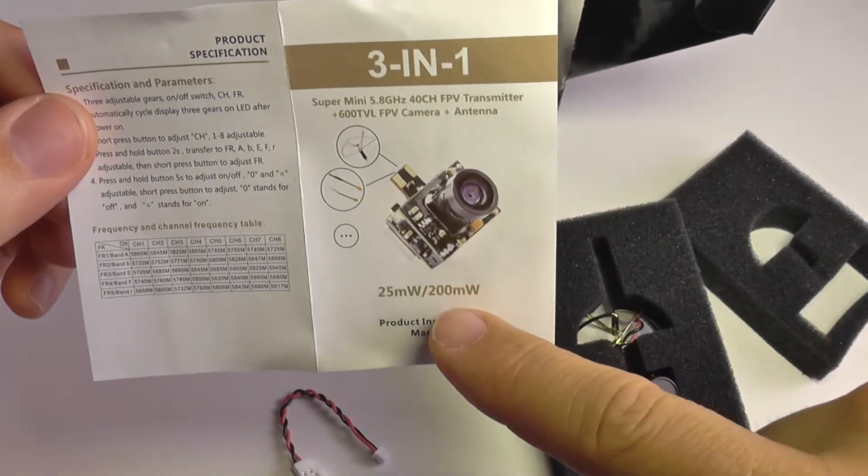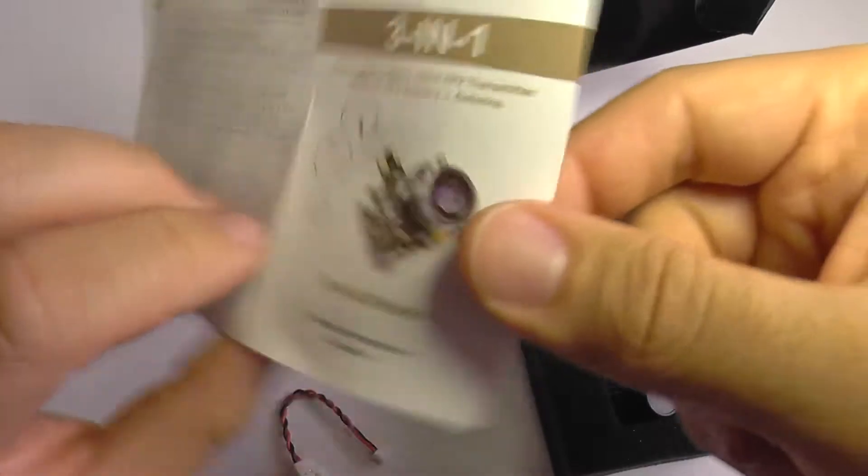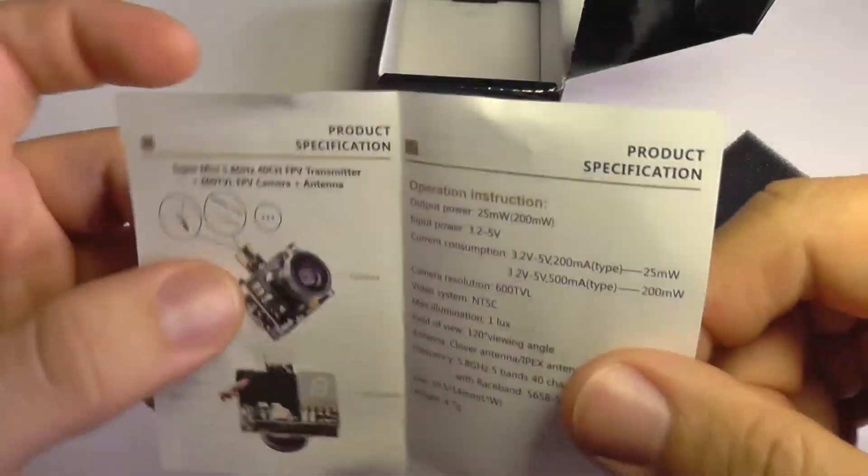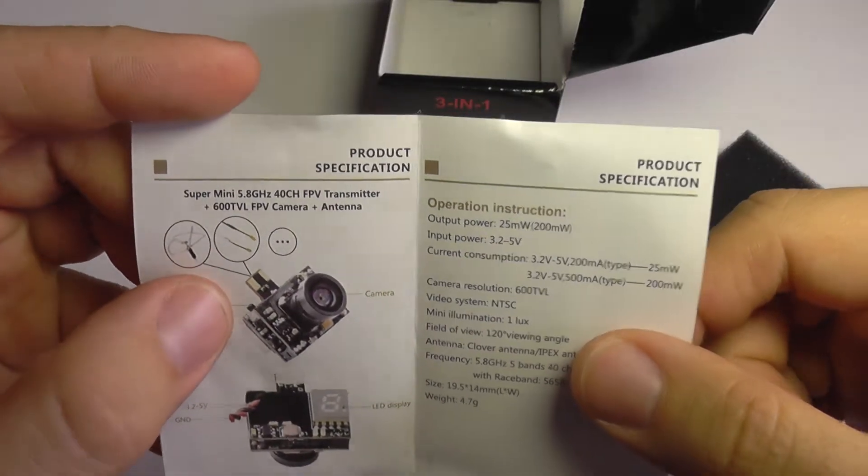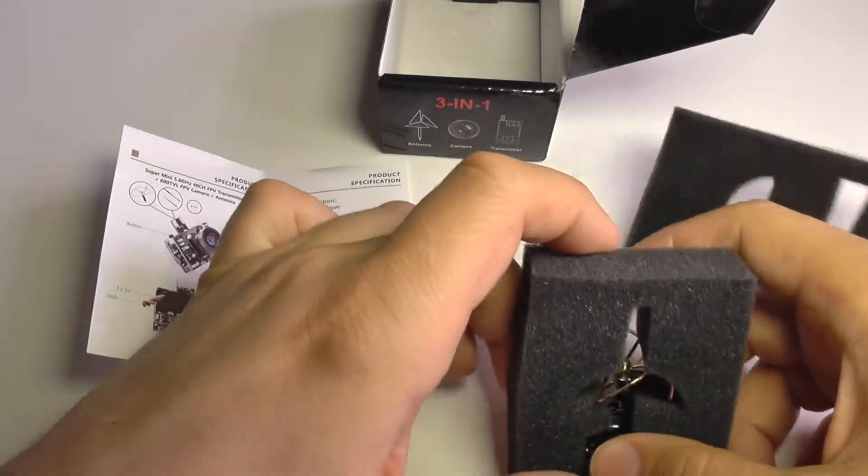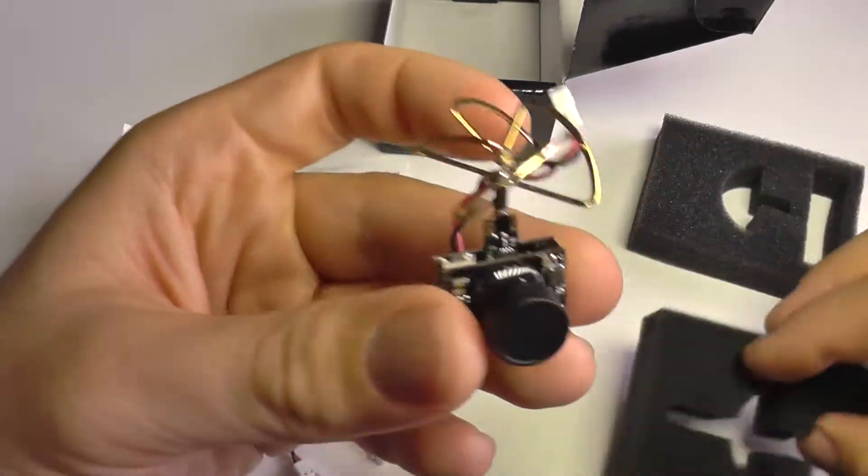This is the 200 milliwatt version and it comes with the antenna pre-soldered, but it shows that there are optional antennas that you can solder on. This comes with a cloverleaf already soldered and there's the pad.